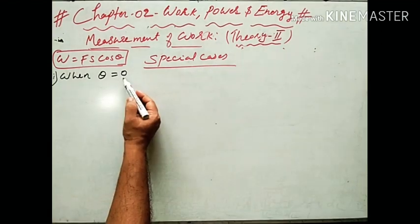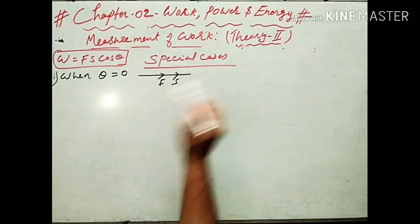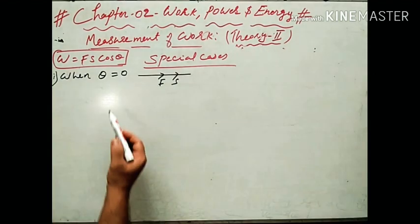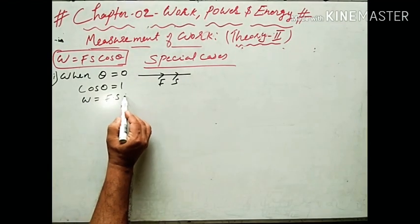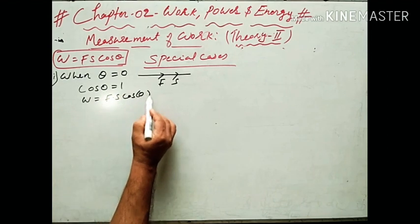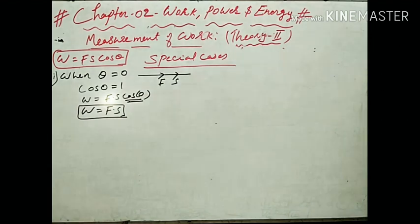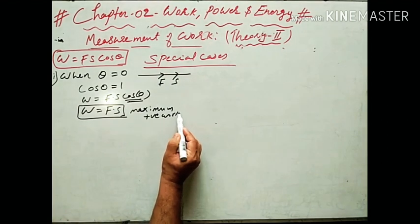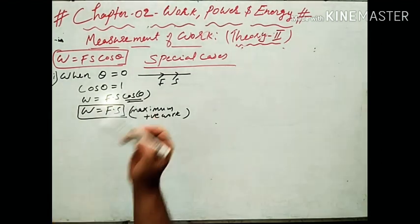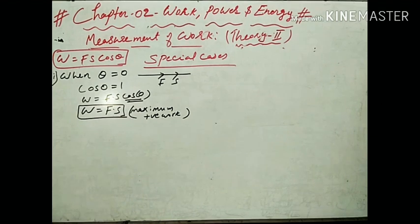The first case: when theta equals 0, that is, when the force and displacement are in the same direction and there is no angle between them. In that case, cos 0 equals 1, so W equals FS cos 0 equals FS into 1 equals FS. This is the case of maximum and positive work — when force and displacement are in the same direction, such that theta equals 0.